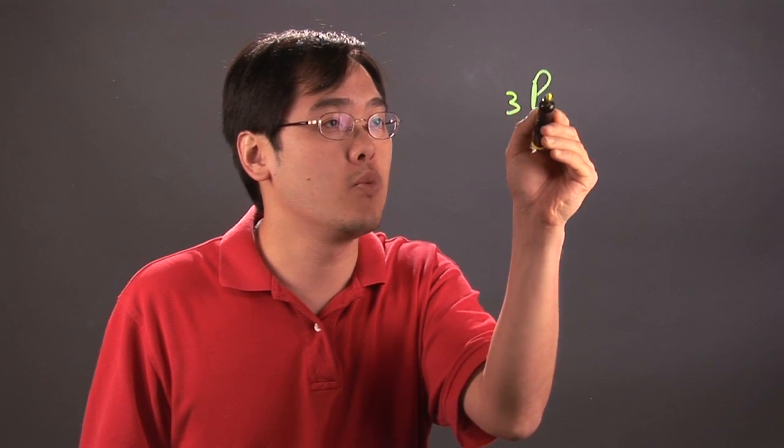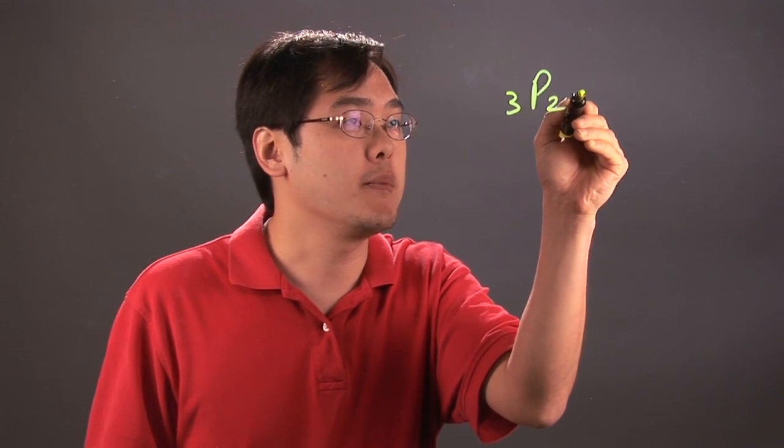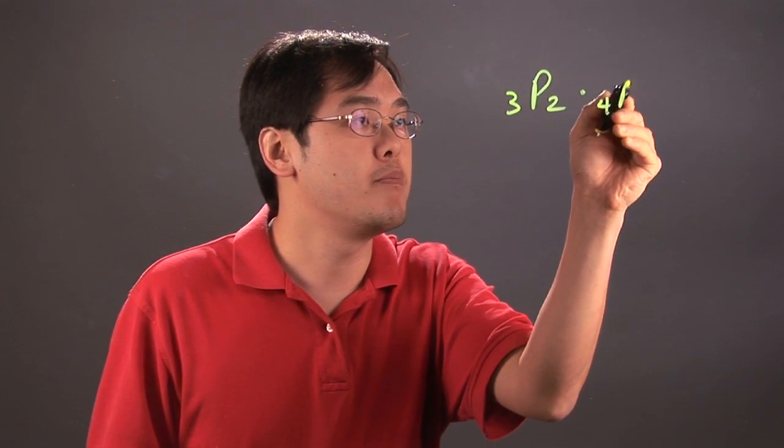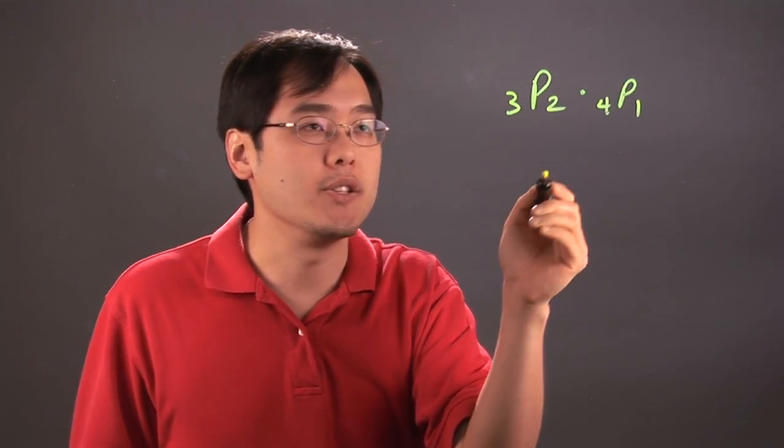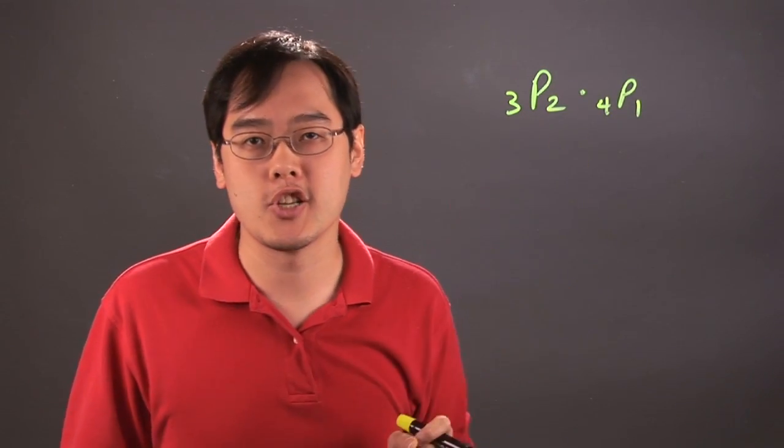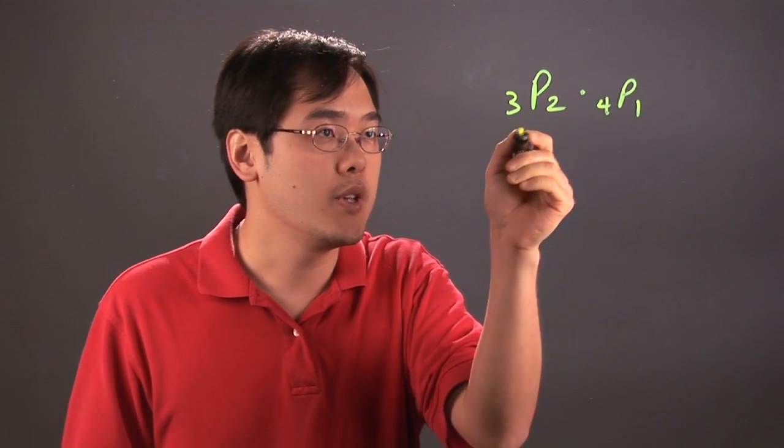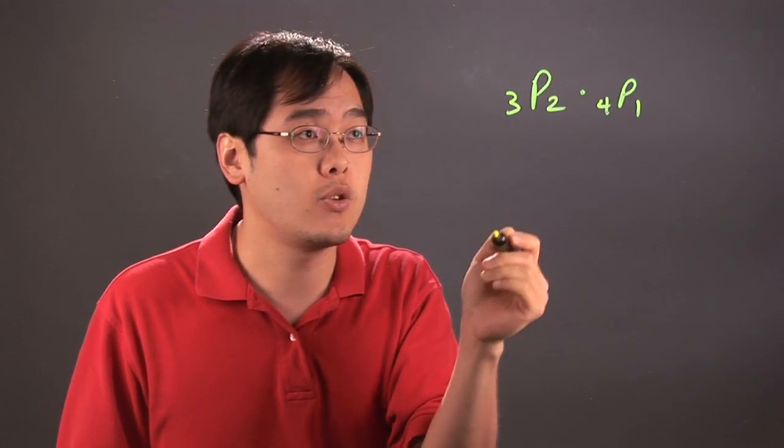Suppose you want to multiply these two permutations: 3P2 times 4P1. Now you can't really multiply these two until you break up each permutation expression and go from there. So you have to remember the formula for permutations.